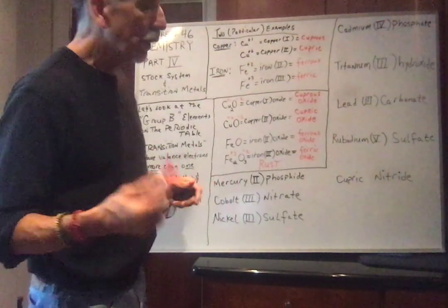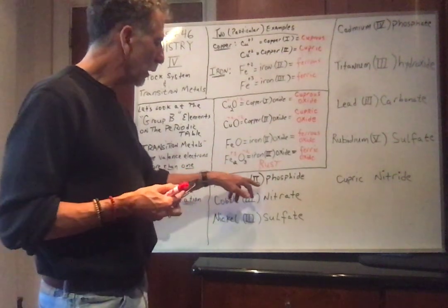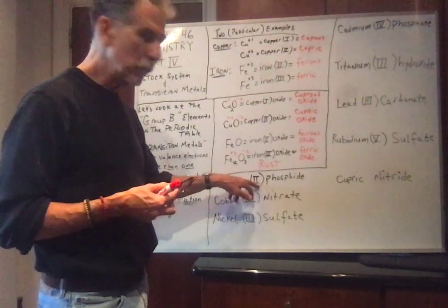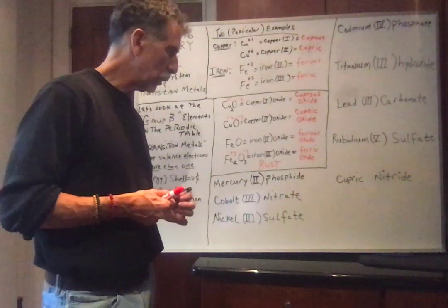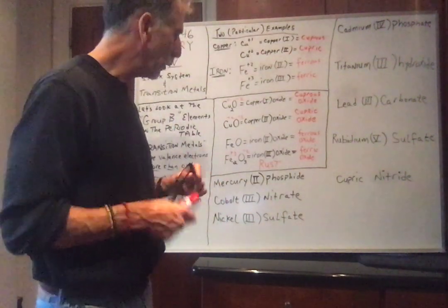All right, so let's do simple problems. So the number in parenthesis, Roman numeral, in the stock system is telling you the oxidation state of that transition metal.